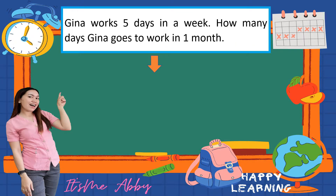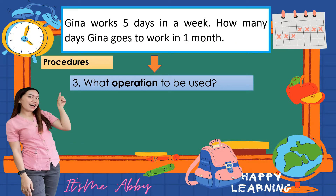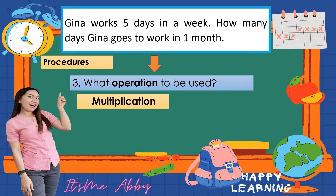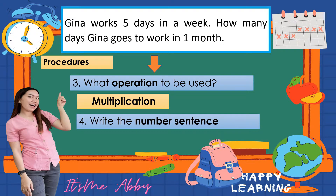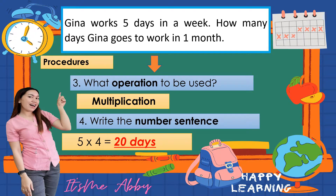For the third step: what operation is to be used? Since we are going to find the days in a month, we need to use multiplication. Fourth, write the number sentence. The number sentence is 5 times 4.